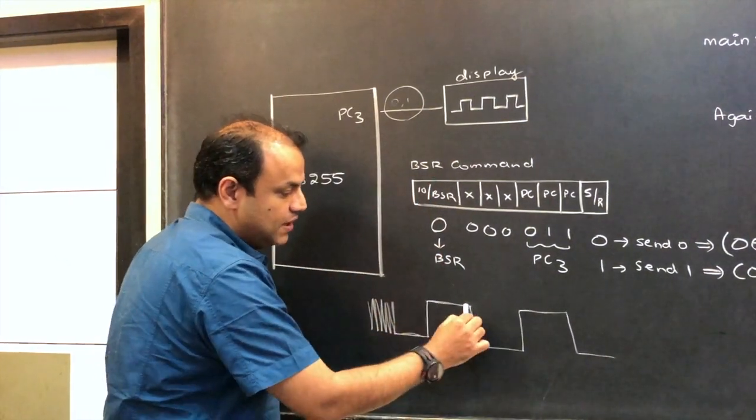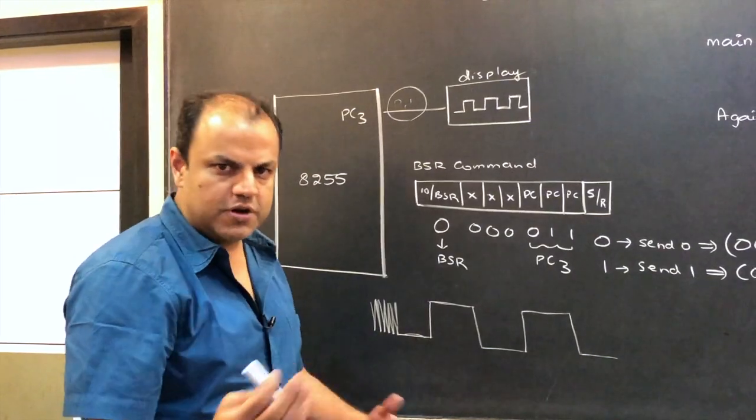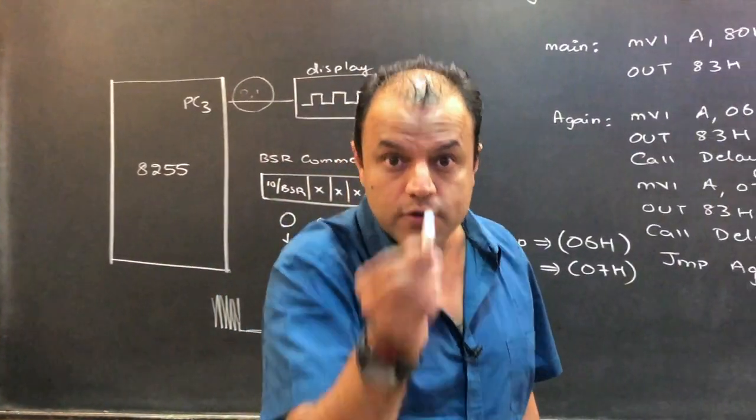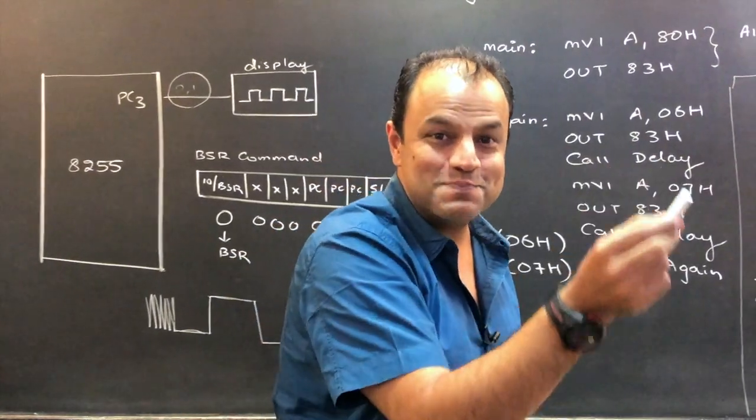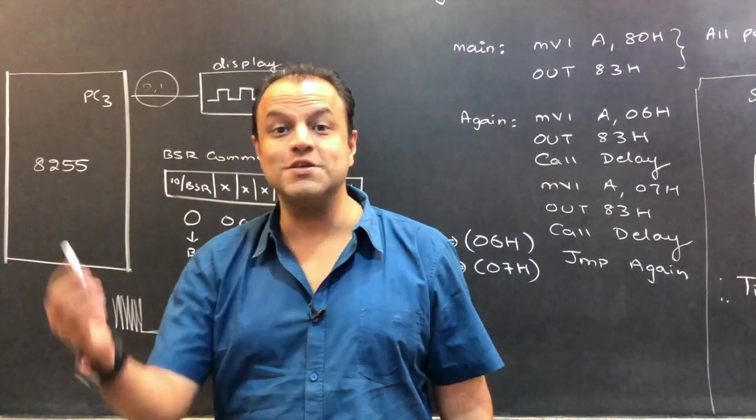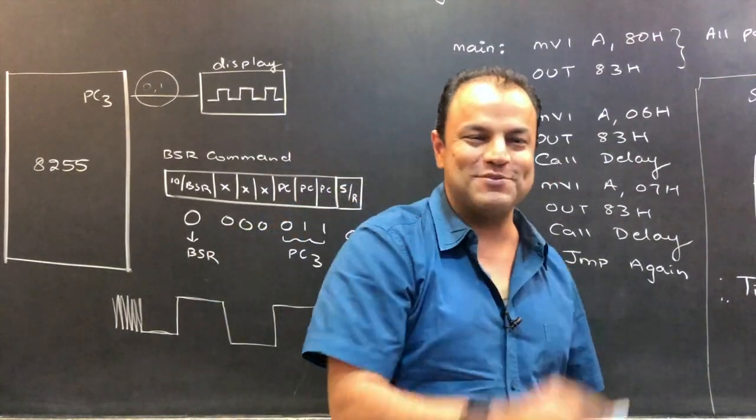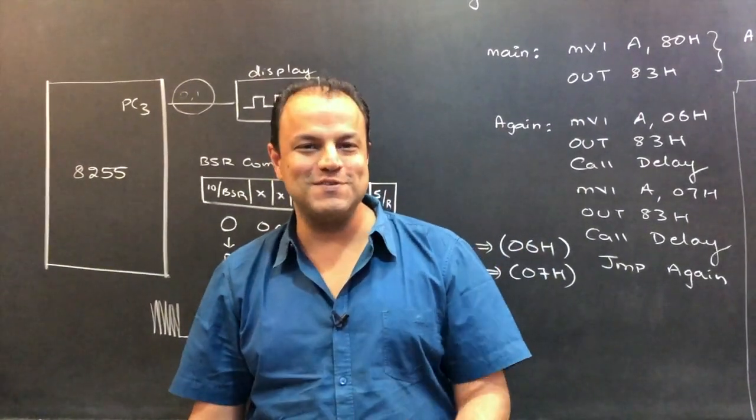If you put the same delay, you'll get an exact square wave. If you put different delays, you'll get rectangular wave. You may put a delay after zero and no delay after one, then you'll get spikes. Those are called positive spikes. You may put a delay after one, no delay after zero, then you get negative spikes. So they're all modifications of the same program.